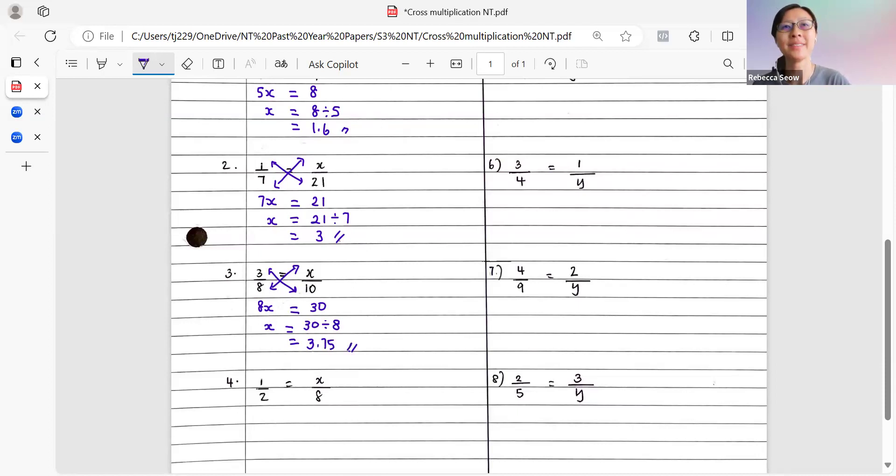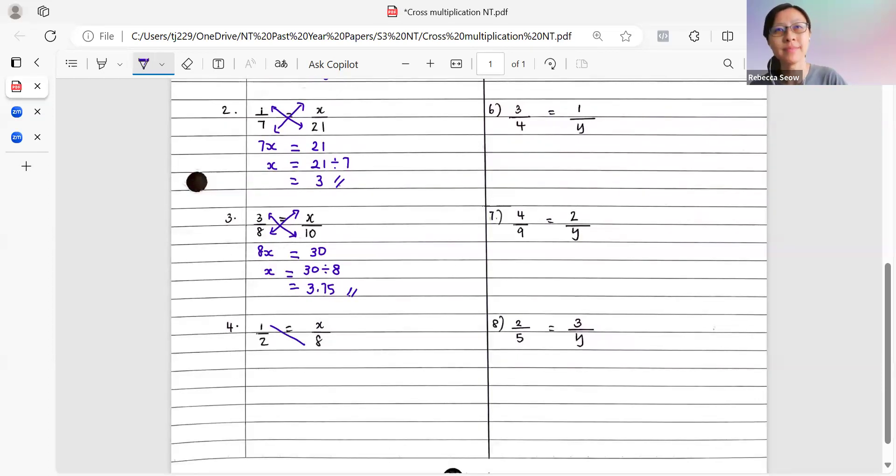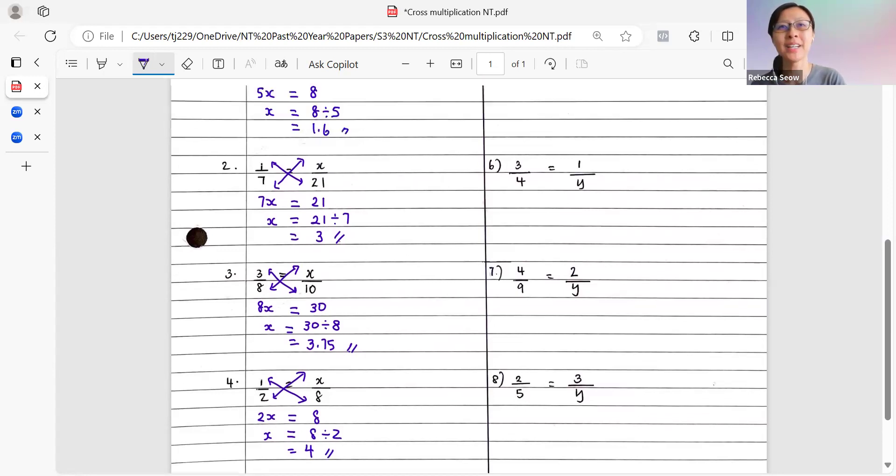Now, the next one, we have half equals to x out of 8. Similarly, we draw in the diagonals. 2x on the left, and on the right, we have 1 times 8, which is 8. Bring it down to x, that will be 8 divided by 2, which gives us 4. I hope so far, so good.